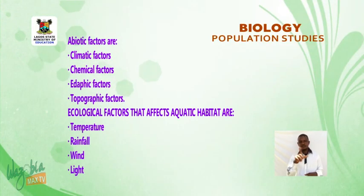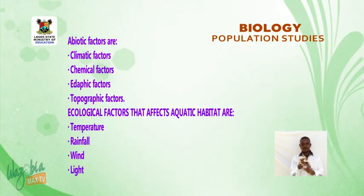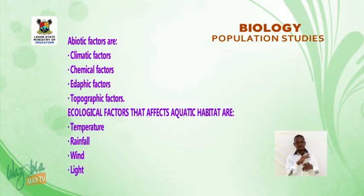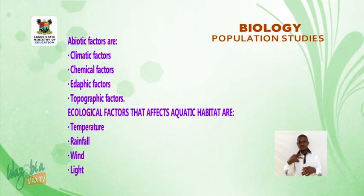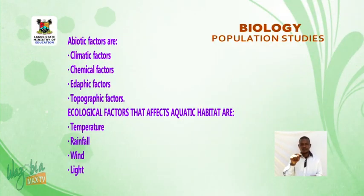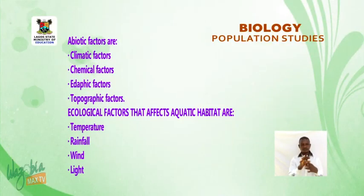Abiotic factors include: climatic factors, chemical factors, edaphic factors, and topographic factors. Ecological factors that affect aquatic habitats are: temperature, rainfall, wind, light, pressure, hydrogen ion concentration, salinity, turbidity or transparency, dissolved gases, density, current, and waves.